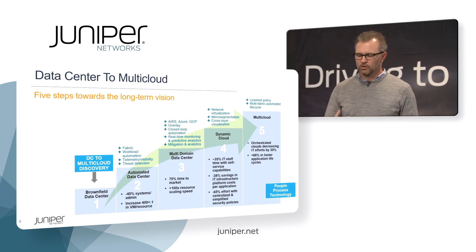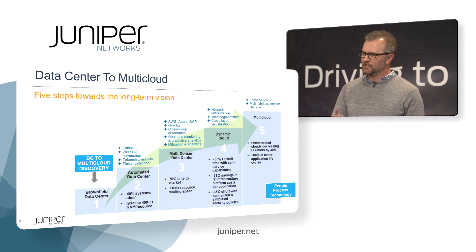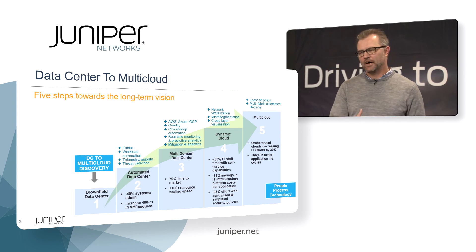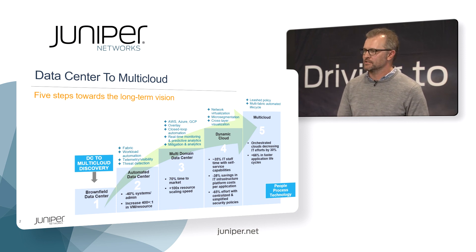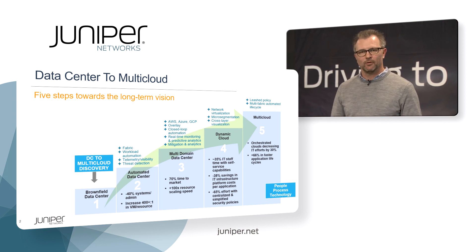Throughout all of this, we're looking at the people and the processes, not just the technology. Networking is very important, but the network infrastructure itself is secondary to how you use that infrastructure. The people, the teams — how the DevOps teams, the network teams, and the security teams are working together with common tooling, common APIs, and common processes — is key through all of this. Ultimately, this leads us to the goal of a secure, automated, and simple multi-cloud environment.